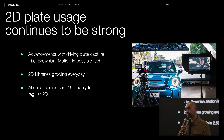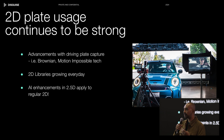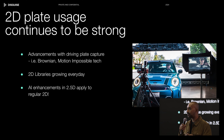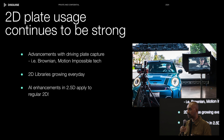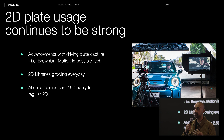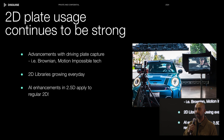2D plates and driving plates remain the backbone of virtual production and continue to be strong. Vendors like drivingplates.com, Plateplows, and Brownian are building car plates with higher and higher quality. Their technology is evolving alongside ours. Car process is still very, very popular — I would say more than half of all LED volume shoots worldwide use car process, and their libraries are growing every day.